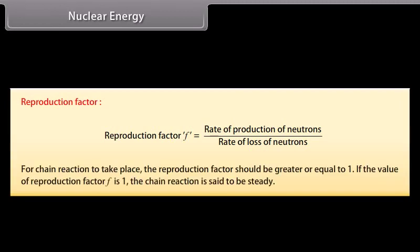Reproduction factor: it is defined as the ratio of rate of production of neutrons to the rate of loss of neutrons. For chain reaction to take place, the reproduction factor should be greater or equal to 1. If the value of reproduction factor is 1, the chain reaction is said to be steady.